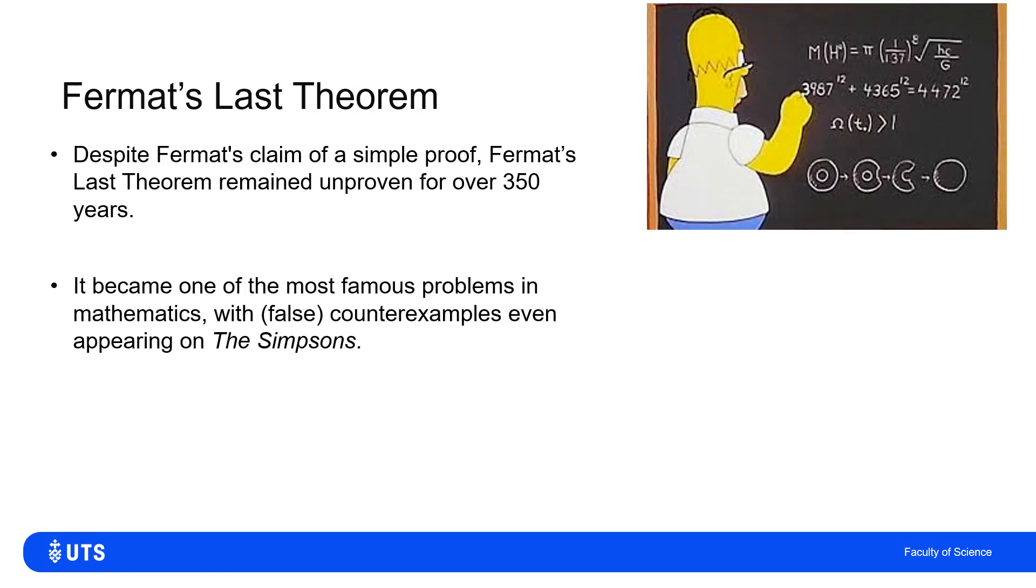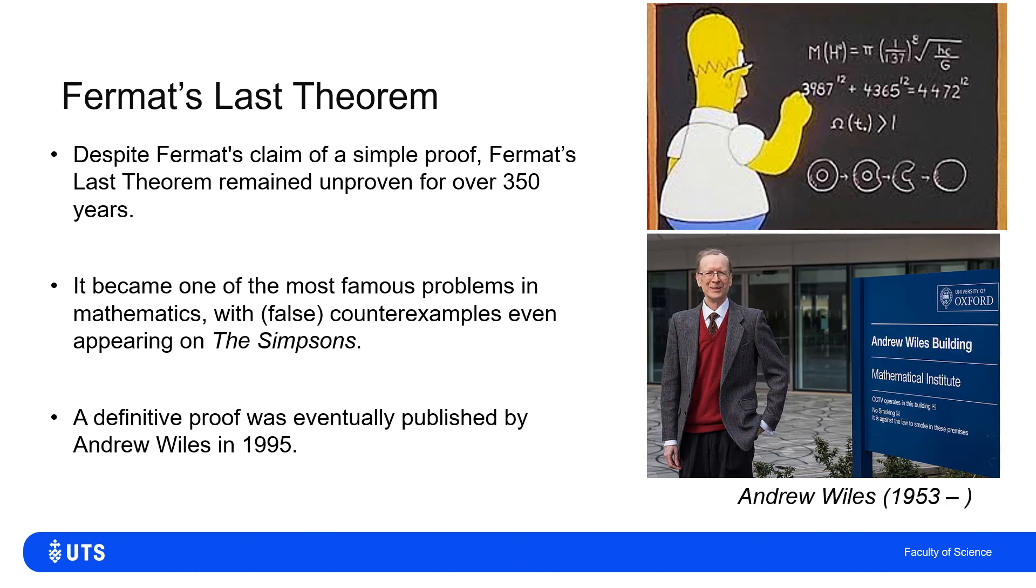And it spawned an amazing interest, both within the mathematical community and further afield, including the Simpsons jokingly claiming to find a counterexample. But it was actually eventually proven to be correct, with the proof published by Andrew Wiles in 1995, a man so distinguished that Oxford University has named its new mathematics building after him.